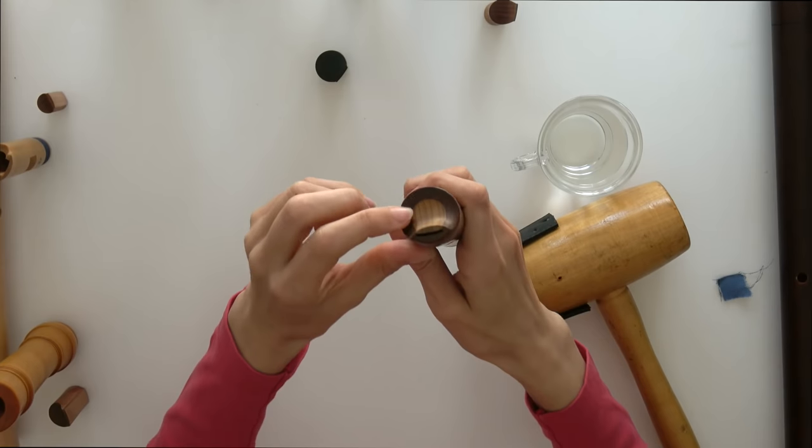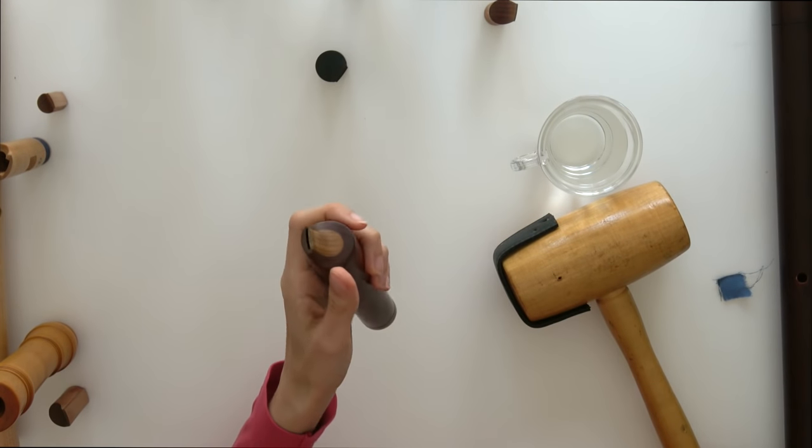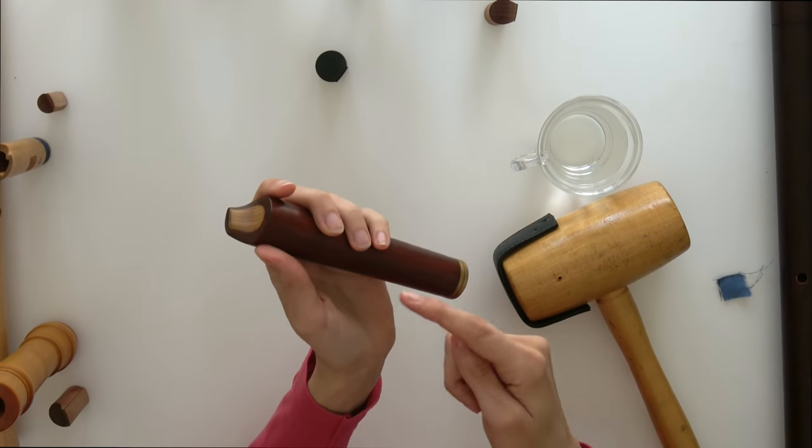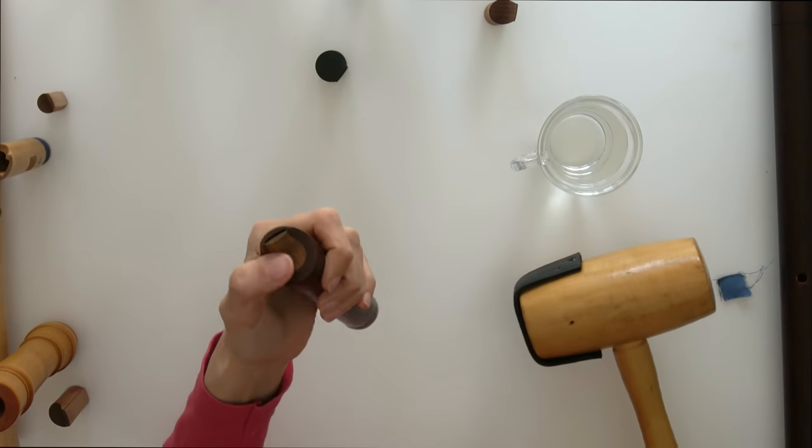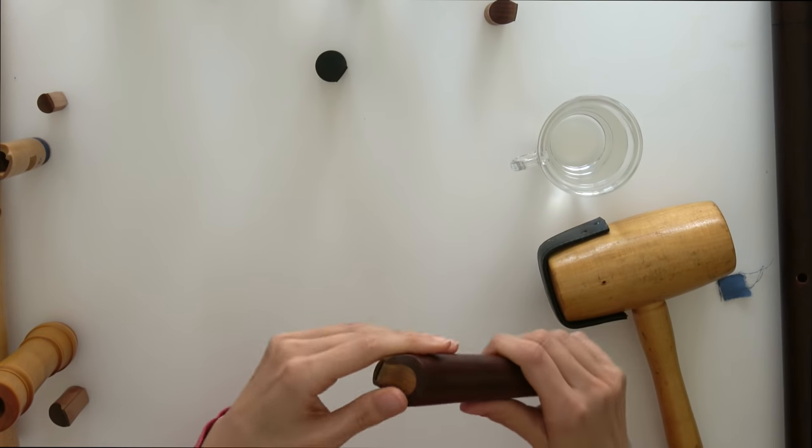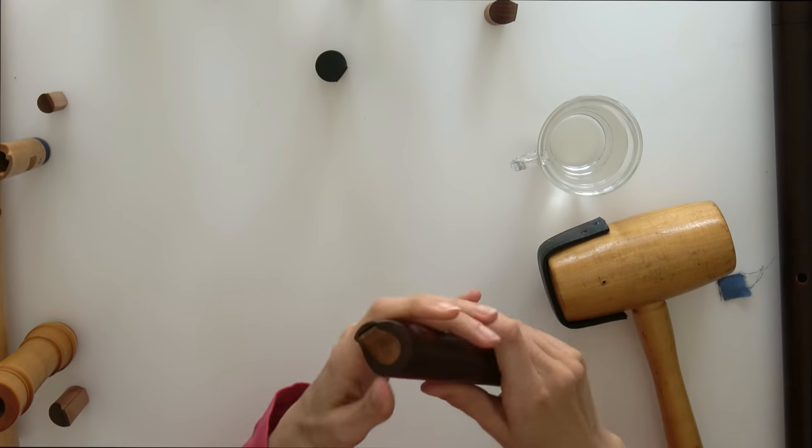If going inward you feel the edge, it means the block hasn't entered enough. Then I either take it out more so I can use impact to get it in with the hammer or my thumb. Or I could also try directly to push more and see if that works.